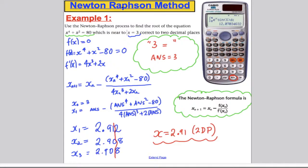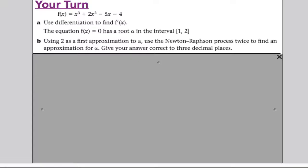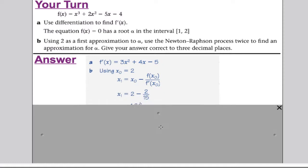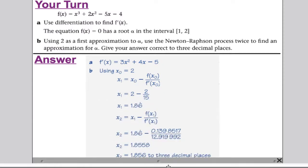Your turn to try a question. Here we go. Pause the video. In 10 seconds, I'll reveal the answer. Part A just asked you, using differentiation, to find f dashed x. The answer should have been 3x squared plus 4x subtract 5. Then it tells you the function f of x equals 0 has a root in between 1 and 2. Use 2 as your first approximation. Use the Newton-Raphson twice to find an approximation for alpha.